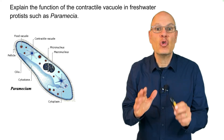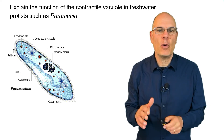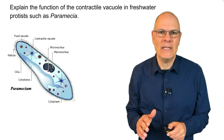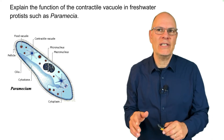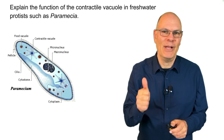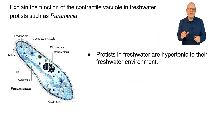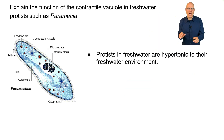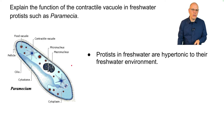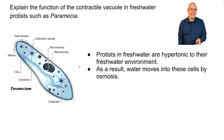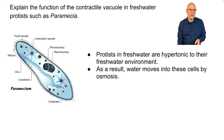Explain the function of the contractile vacuole in freshwater protists such as paramecia. A protist is a eukaryote that is not a plant, an animal, or a fungus. Protists in freshwater are hypertonic to their freshwater environment, meaning the cytoplasm has more solutes dissolved in it than the lake or stream they swim in. As a result, water moves into these cells by osmosis, flowing from hypotonic to hypertonic.